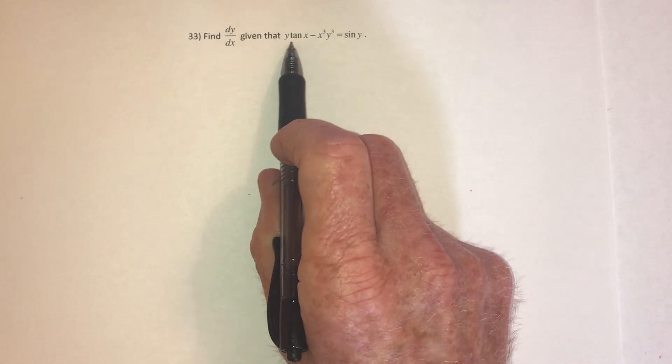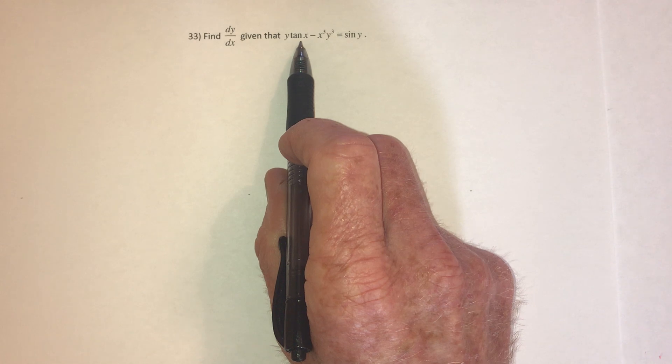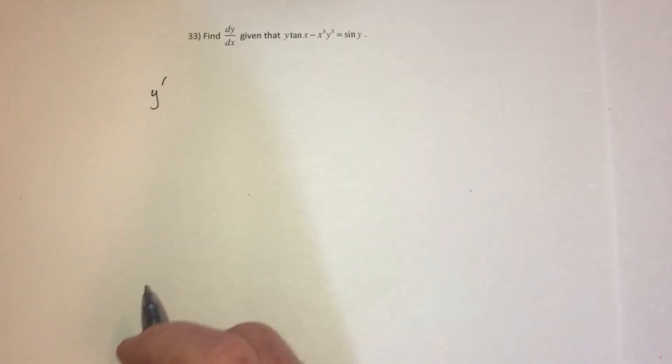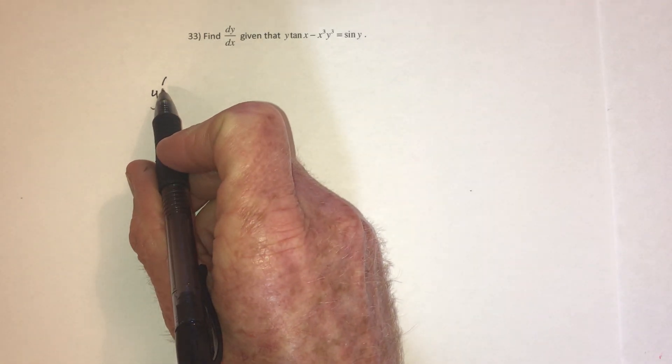So with this one, it's a y times a tangent, so it's going to be the product rule. Take the derivative of y first of all. And since I don't know what y is equal to, I don't know what its derivative is, so I just put this symbol there. There's the derivative of y.